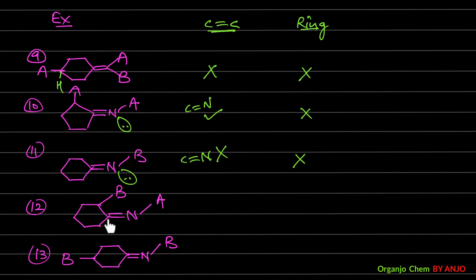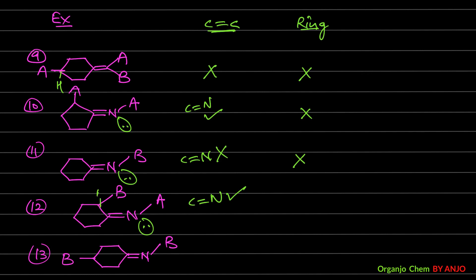Example 12: The SP2 nitrogen has a lone pair and another group — two different groups. The SP2 carbon has group B on one side and two hydrogens on the other, which are different by CIP rules. So the C=N GI condition is fulfilled. For the cyclic part, only one carbon has two different groups (B and H); no second such carbon is found. So example 12 cannot show GI through the ring.